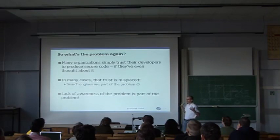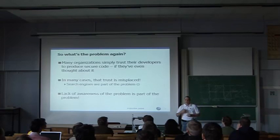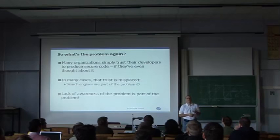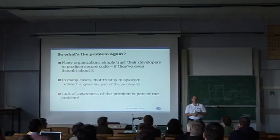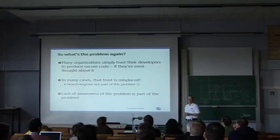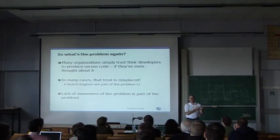So what's the problem? In many cases, an organization doesn't even think about application security. They simply trust that their developers know they have to produce secure code and know how to do that — and in many cases, that trust is misplaced. Developers don't know that security is their responsibility. If you're working in an organization, many times you ask a developer who's responsible for security, and they'll say, 'We've got a security department — network security, they do the firewalls and stuff.' That's absolutely not true. You've got a hole punched through the firewall connecting straight through into your application, so your application is now part of your security perimeter.